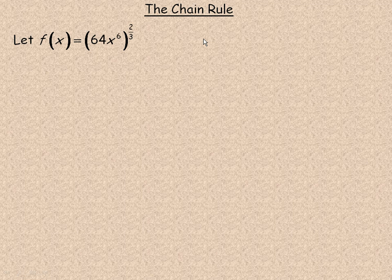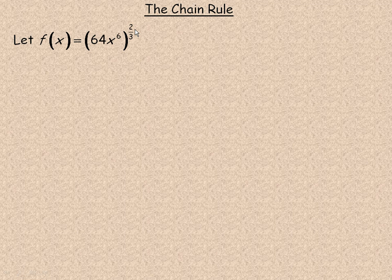In this lesson we'll take a look at a differentiation rule called the chain rule. The chain rule is used for differentiating functions when you have a function of a function — it's called a composite function. The example on this page is f = (64x⁶)^(2/3). Inside the brackets, 64x⁶ is called an inner or inside function — it's like a whole function of itself. And then that function is raised to the power of 2/3, which is another function. That's what is meant by a function of a function.